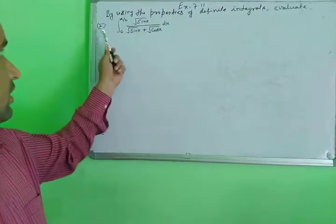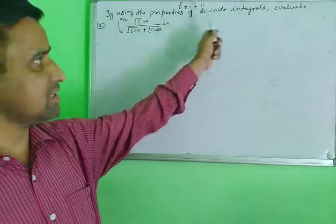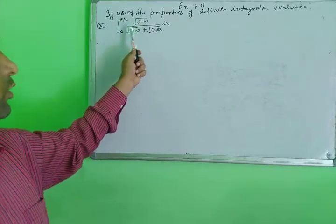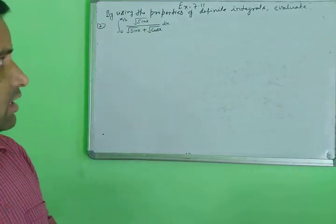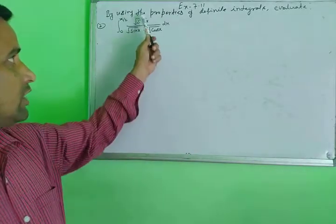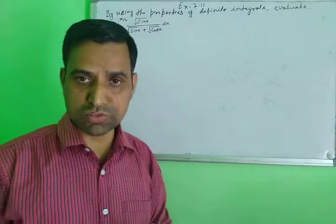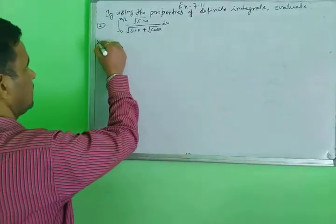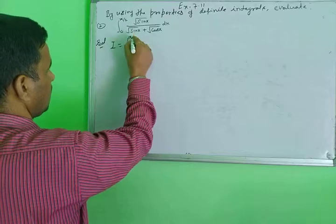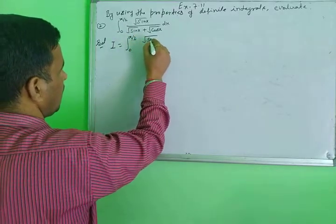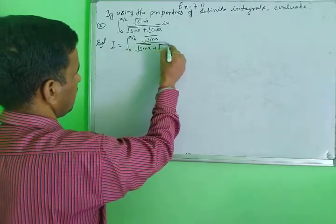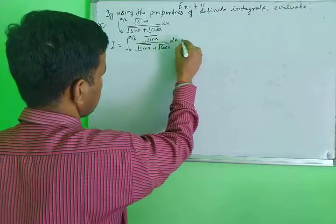Next is Question 2: evaluate the integral from 0 to π/2 of √sinx divided by (√sinx plus √cosx) dx, using the property of the definite integral. If you try to solve this without the property, it is very difficult. Using the same property as in Question 1 makes it straightforward.